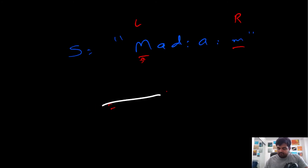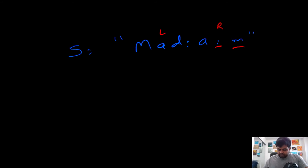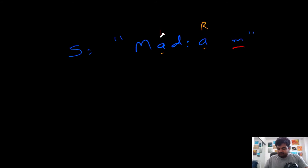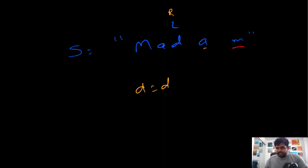Let's trace through an example. Left is at 'm' and right is at 'm' — both lowercase, so m equals m, we're good. We update both pointers. Left moves to the next character and right moves to its previous value, but right lands on a non-alphabet character so we skip it and move right again. Now both are at 'a' — they match, we're good again. Left is now at 'd' and right lands on a colon, which is non-alphanumeric, so we skip it. Right then lands at 'd', matching left.